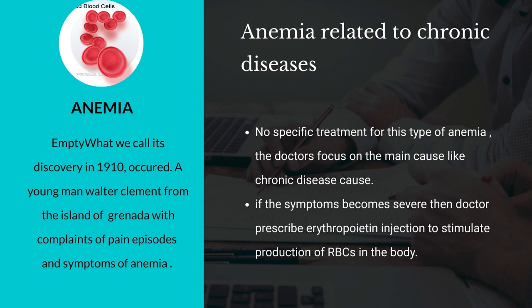Number 3, anemia related to chronic diseases. We have the following possibilities for treatment. First, the doctor focuses on the chronic disease which causes the anemia. Second, if the symptoms become severe, the doctor prescribes erythropoietin injections, which help stimulate the bone marrow to make red blood cells.